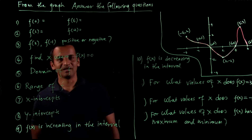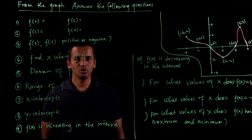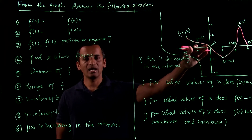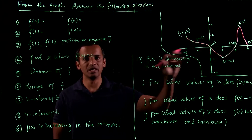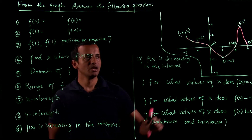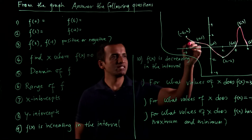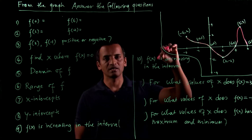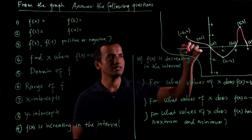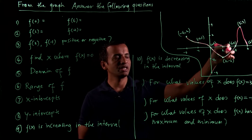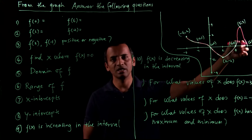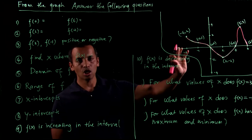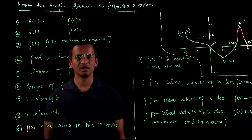Hi, in this video I'm going to show you a graph and then answer the questions based on that graph. The graph is given by this pink curve. There's an x-axis and a y-axis. The function is decreasing and then increasing — maximum, minimum, and then x-intercepts, y-intercepts — all those things are asked here.